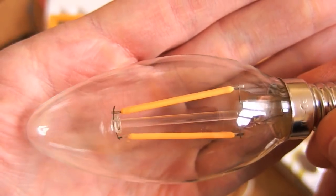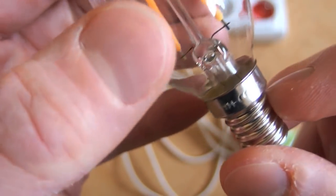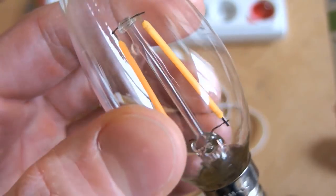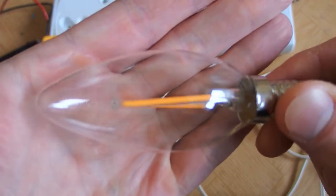It has two filaments in it and a small E14 base. And it seems like the 2W version has two filaments and the 4W version will have four filaments in it. The two filaments are in series.